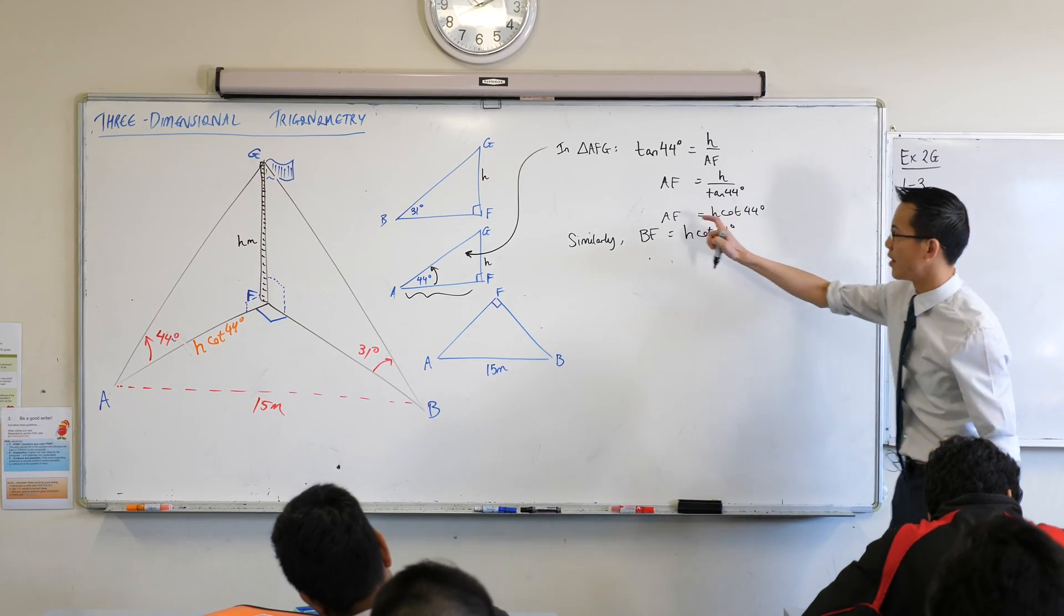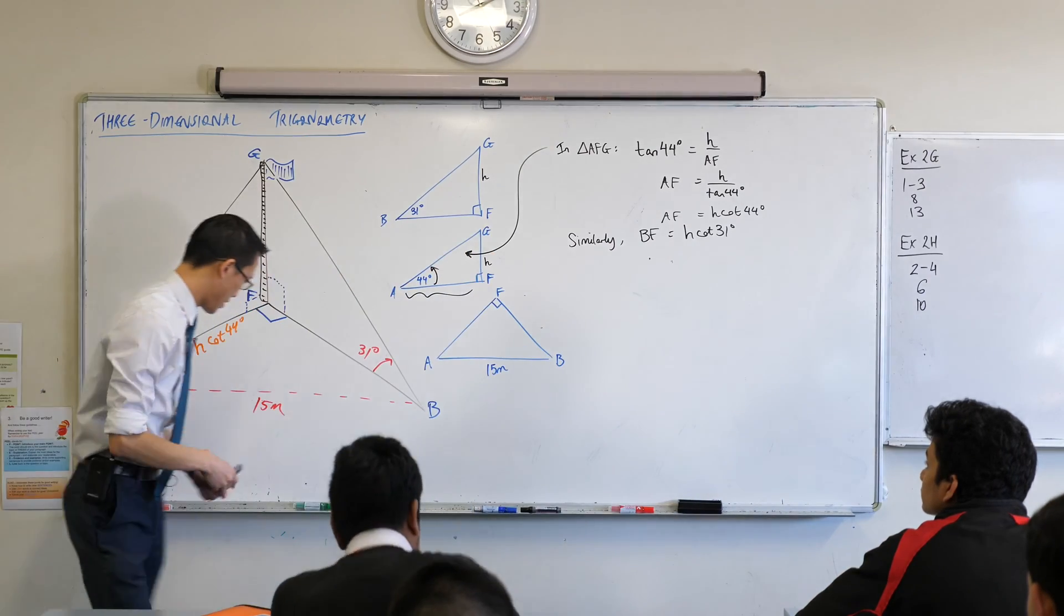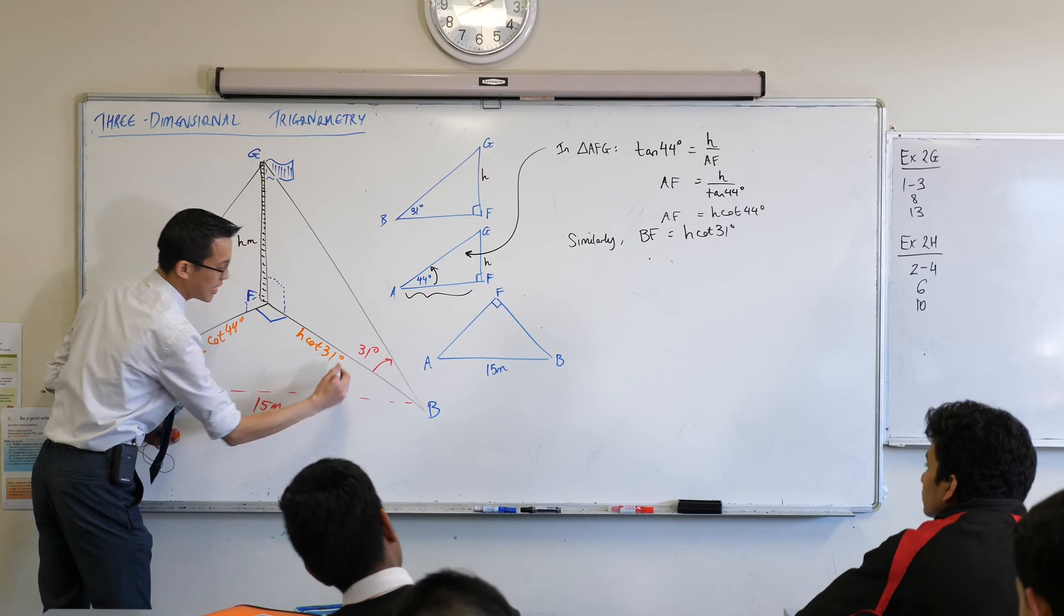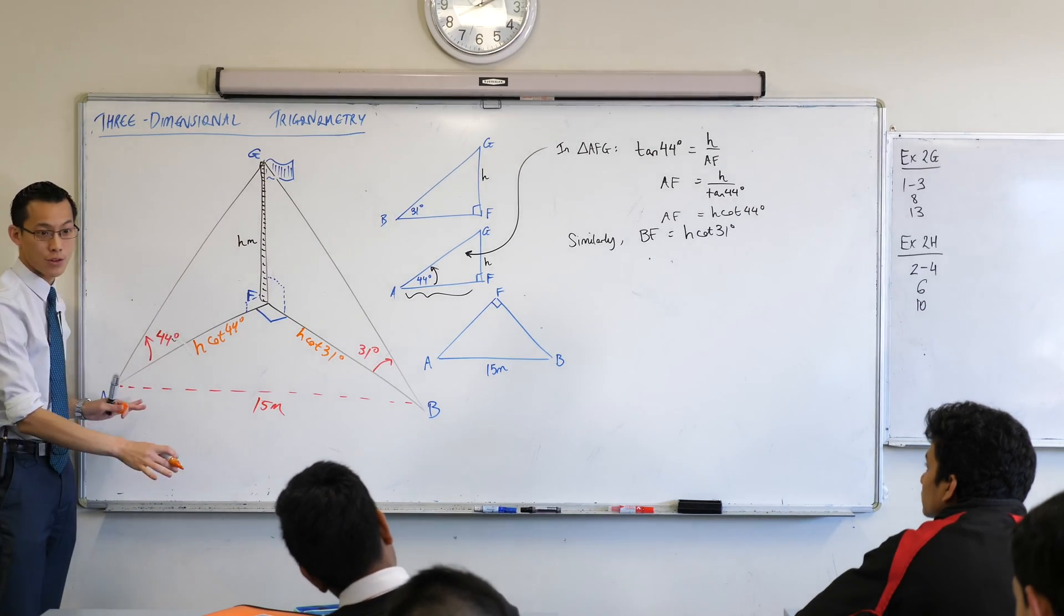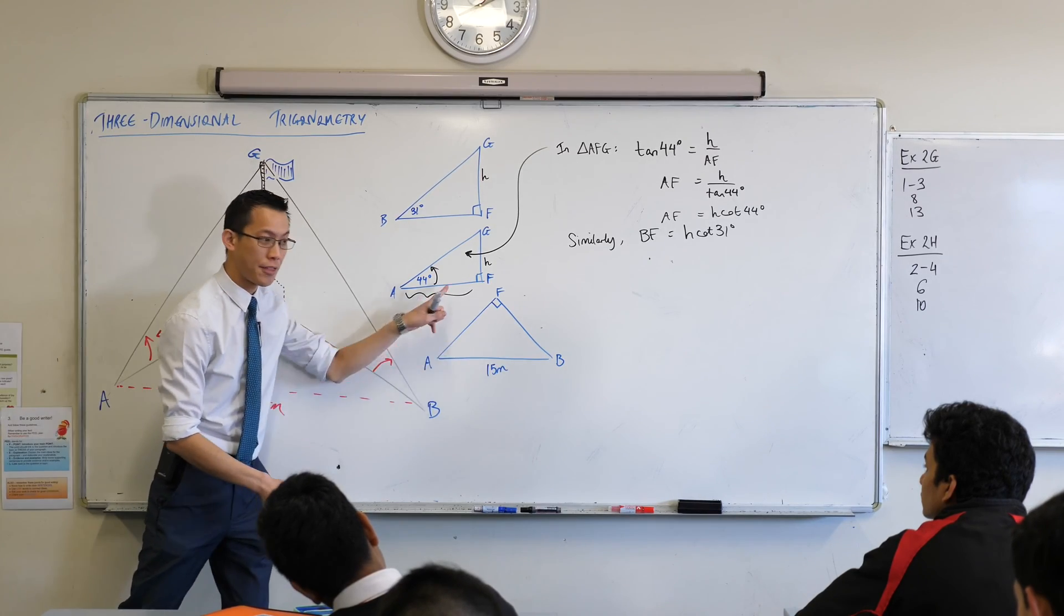So I've got these two. I've got an expression for AF, an expression for BF. I should put that down here. And you can see what this gives us is every measurement in this bottom triangle, the ground triangle. Does that make sense? That's this ABF that I've got here.